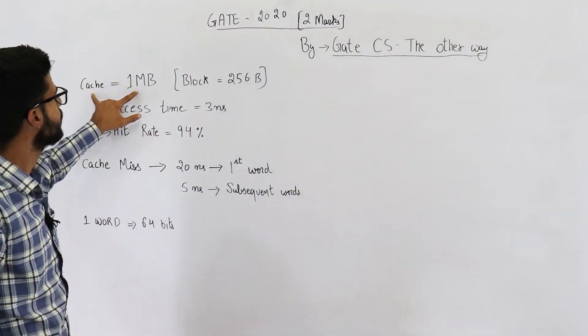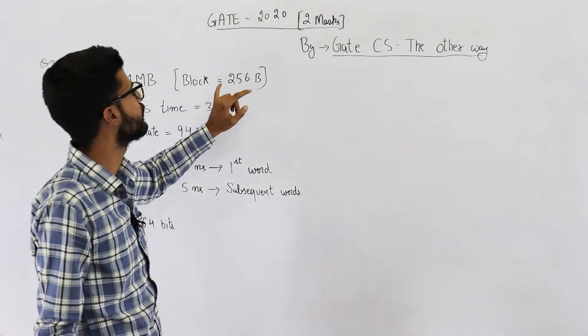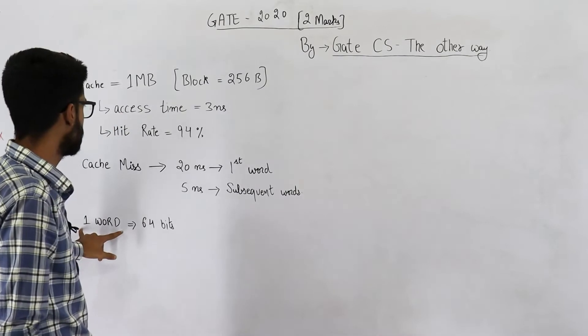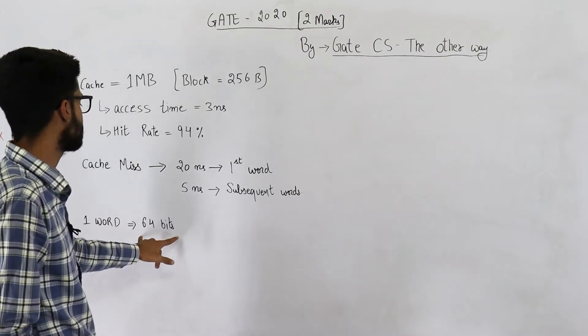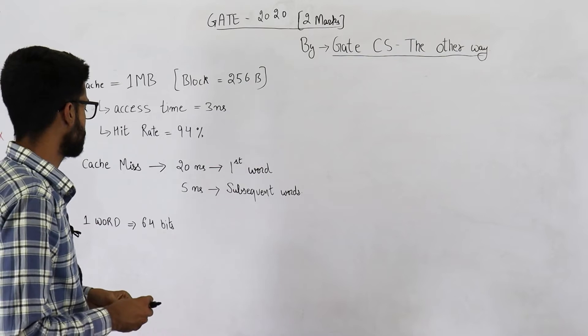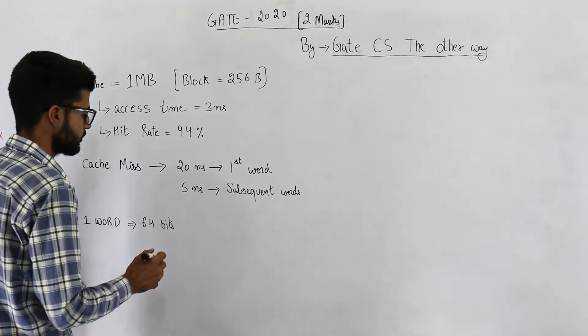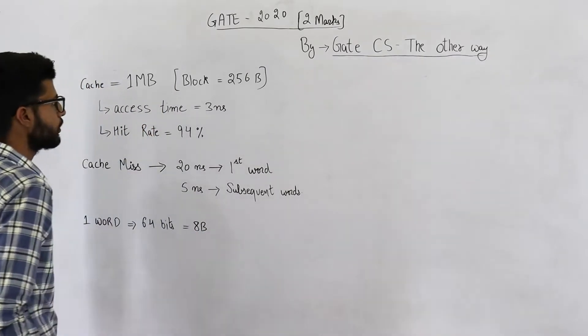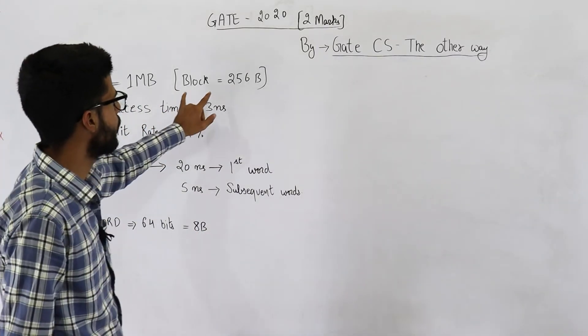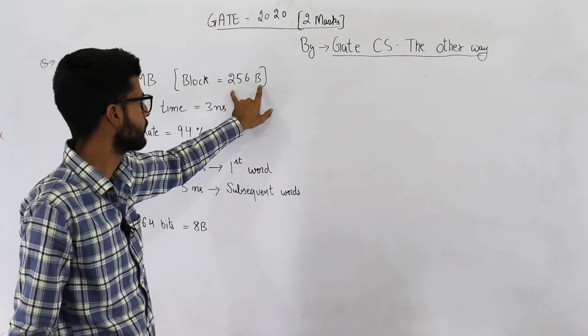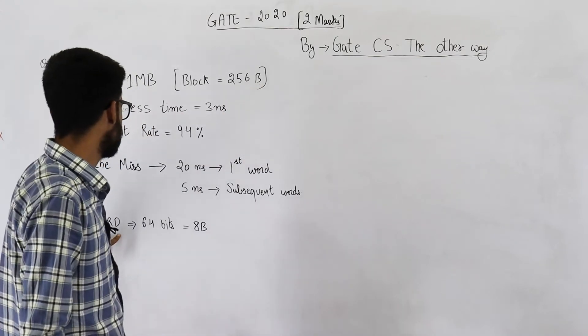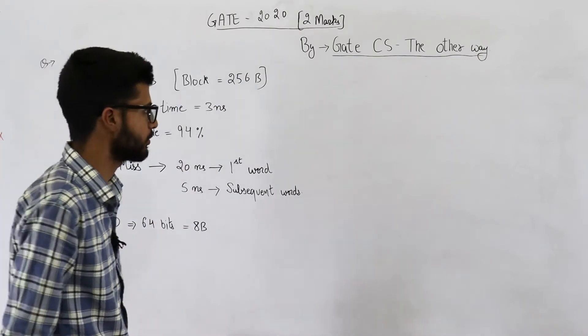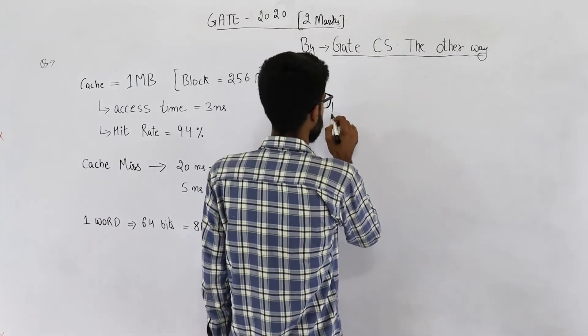They are saying cache of 1 MB has 256-byte blocks. Also, one word is 64 bits. Now you see, 64 bits means 8 bytes. One block has 256 bytes and one word is 8 bytes.